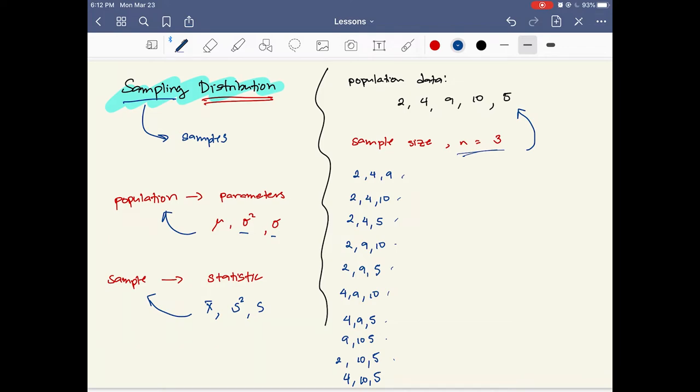So those are all the samples of size 3. Now of course, when we are dealing with data, we can get averages. So for 2, 4, 9, the average is 5.0. For 2, 4, 10, it's around 5.33. For 2, 4, 5, it's around 3.67. For 2, 9, 10, it's around 7.